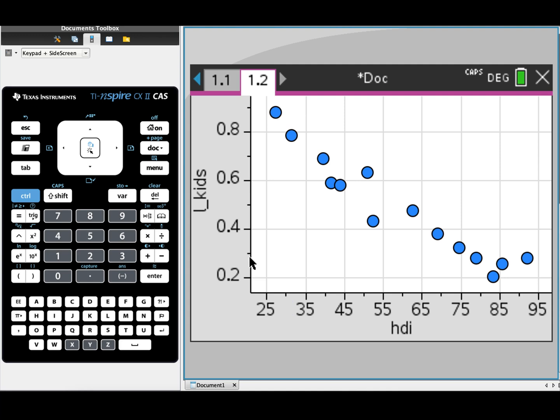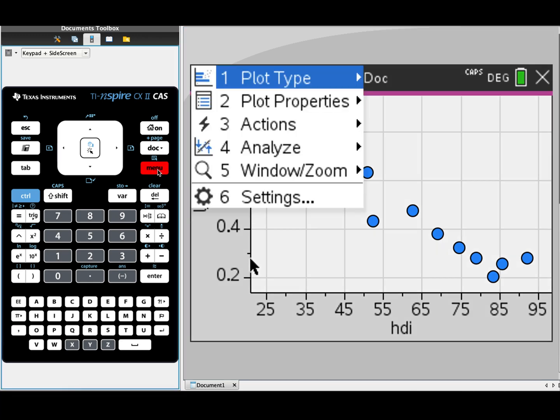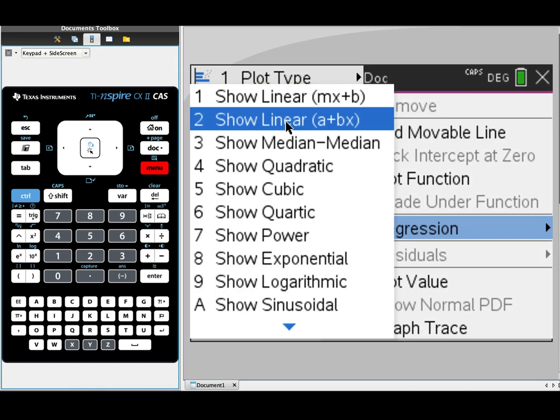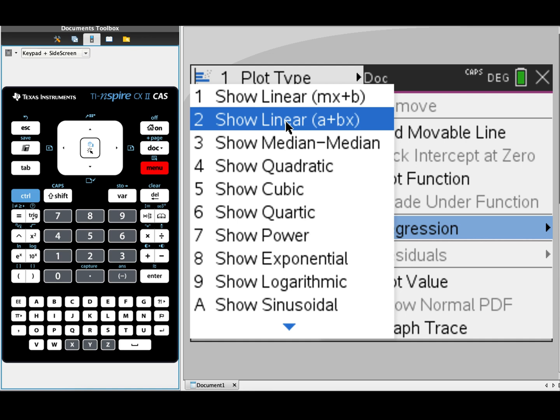The final thing that we're going to do on this scatter plot is get the CAS to give us the regression line or the least squares regression line. To do that, we're going to go into menu, analyze, regression, and show linear, the a plus bx option.